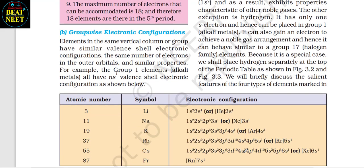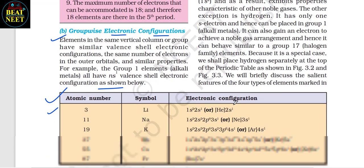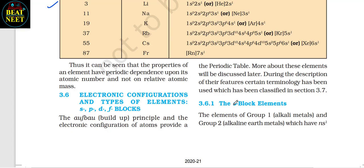Elements in the same vertical column or group have similar valence shell electronic configuration — the same number of electrons in outer orbitals and similar properties. For example, Group 1 elements (alkali metals) all have an ns¹ valence shell electronic configuration. Thus, the properties of an element show periodic dependence upon its atomic number and not on relative atomic mass.